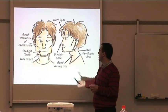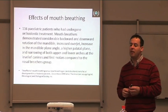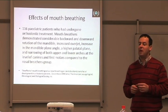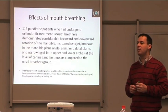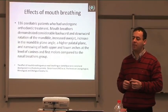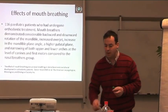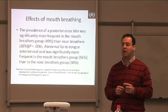We see this definition, well-developed jaws and good airway size. This is a paper by Harari, a 2010 paper of 116 pediatric patients who had undergone orthodontic treatment. Mouth breathers demonstrated considerable backward and downward rotation of the mandible, longer faces, increased overjet, increase in the mandible plane angle, a higher palatal plane, and narrowing of both upper and lower arches at the level of the canines and first molars compared to the nasal breathers group. The prevalence of a posterior crossbite was significantly more frequent in the mouth breathers group.